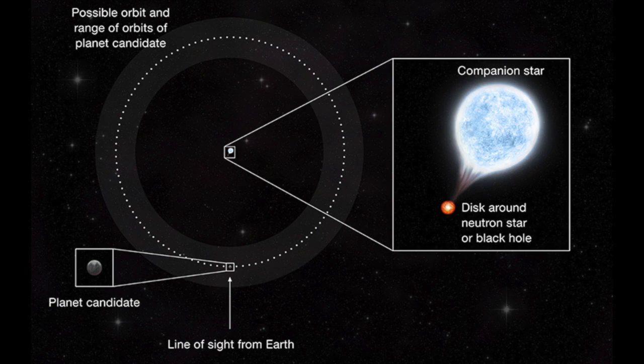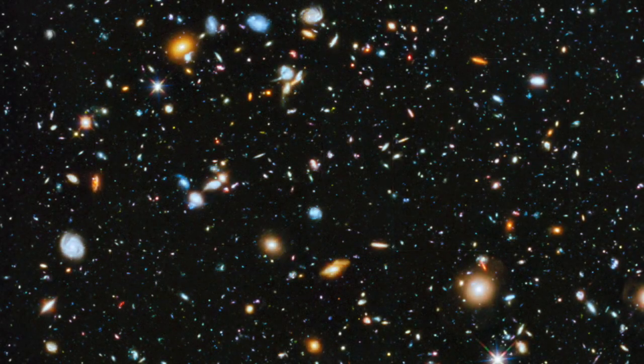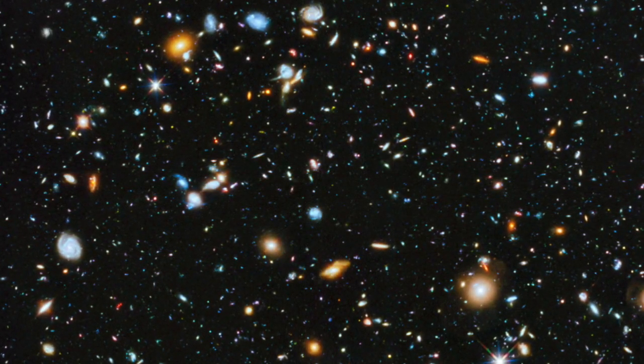The planet, if that's what it is, takes about 70 years to complete one orbit, so astronomers have a long wait before the next transit. But the discovery raises hopes that more extragalactic planets will be found using the same technique.